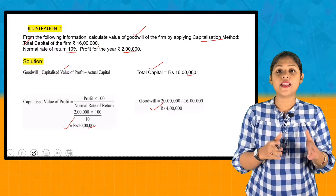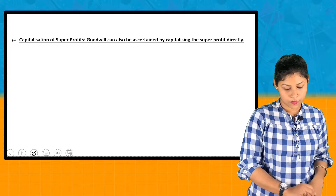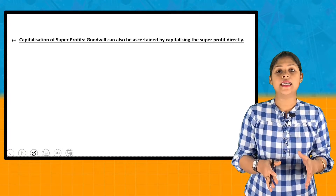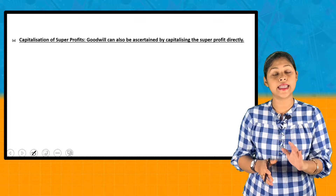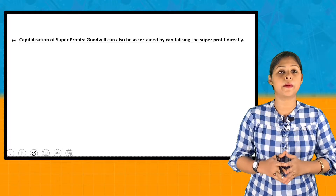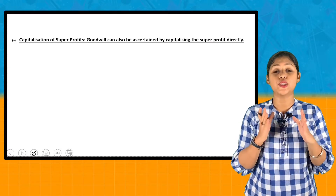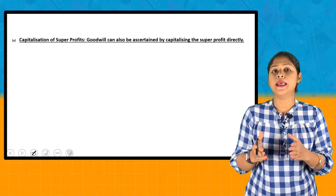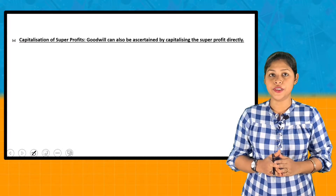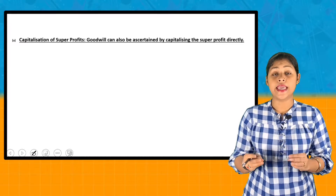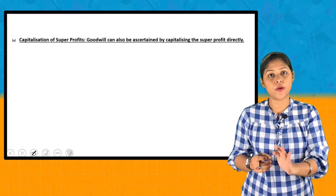Next, we will look at the Capitalization of Super Profit Method to calculate goodwill. When we calculate super profit, we take the total capital employed, multiply it by the normal rate of return to get the normal profit. We then take the actual profit earned during the year, subtract the normal profit, and we get the super profit.